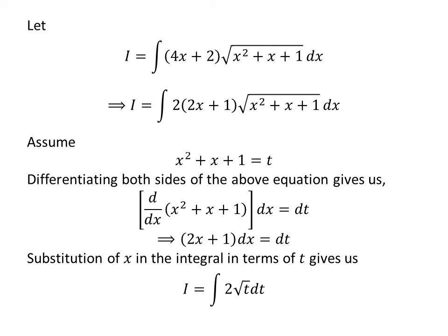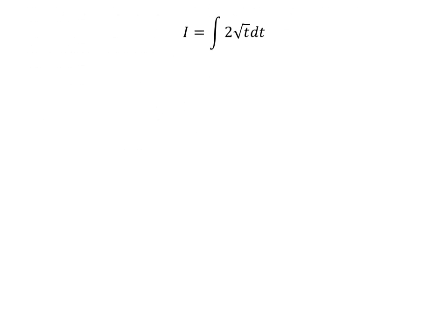In the integral i, let us substitute x squared plus x plus 1 by our assumed value t, and 2x plus 1 times dx by dt. So i is equal to the integral of 2 times square root of t with respect to t.